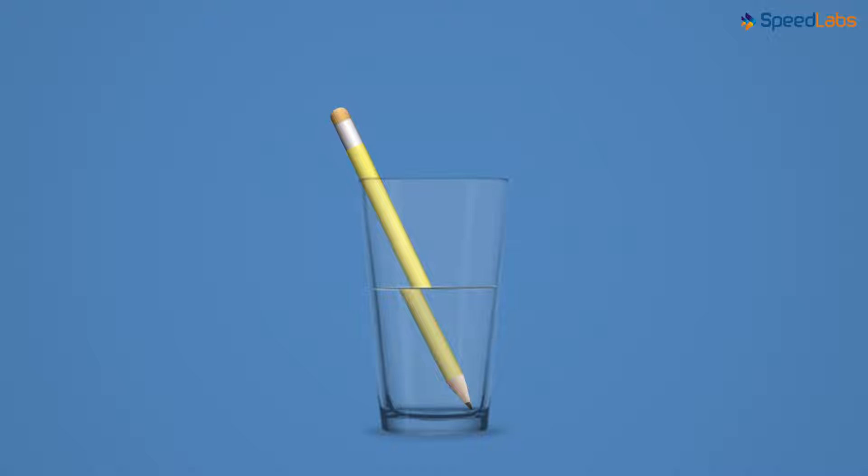Let's look at this pencil from the side. It looks as if the pencil is broken inside the glass of water. Did it really break? No, the pencil didn't break. It only appears to be broken. And why does it appear so? Yes, it's due to refraction of light.